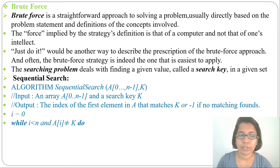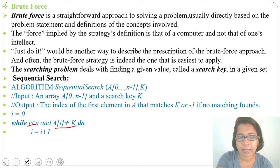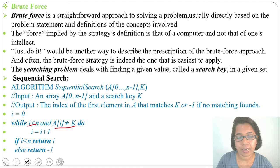Initially, i equals to 0, while i less than n and A[i] not equals to k do i equals to i plus 1. When these two conditions satisfy, i value will increment. Next, if i value is less than n, return i, else return minus 1.